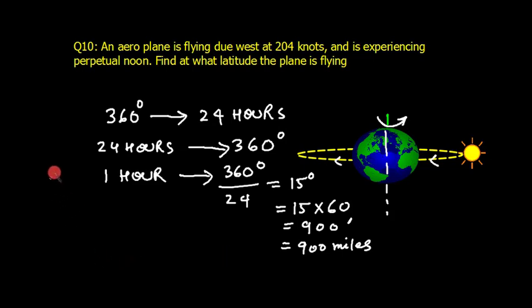So we can say the apparent speed will be 900 knots at the equator.